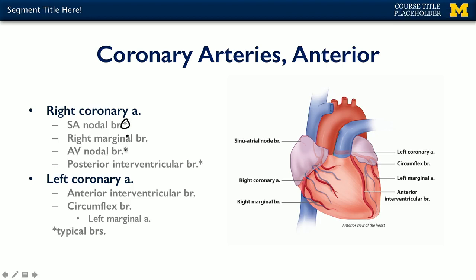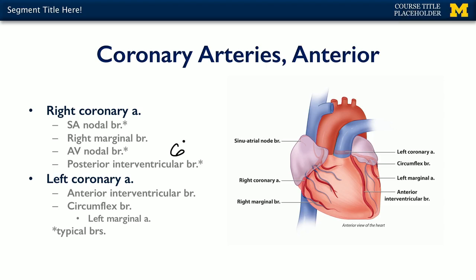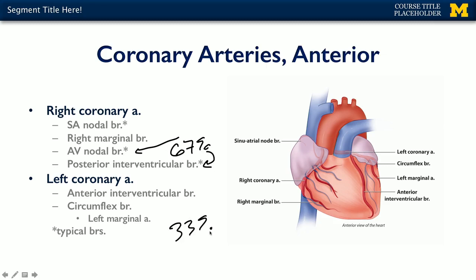When discussing the RCA and LCA, keep in mind that there's going to be some variation. These asterisks indicate that certain vessels are typically branches of the RCA. For instance, about 60% of the time the SA nodal branch comes from the RCA, which means about 40% of the time it originates from the LCA. Likewise, about 67% of the time the RCA supplies the crux of the heart — giving rise to both the AV nodal and posterior interventricular branches — meaning about 33% of the time the crux is supplied by the LCA.